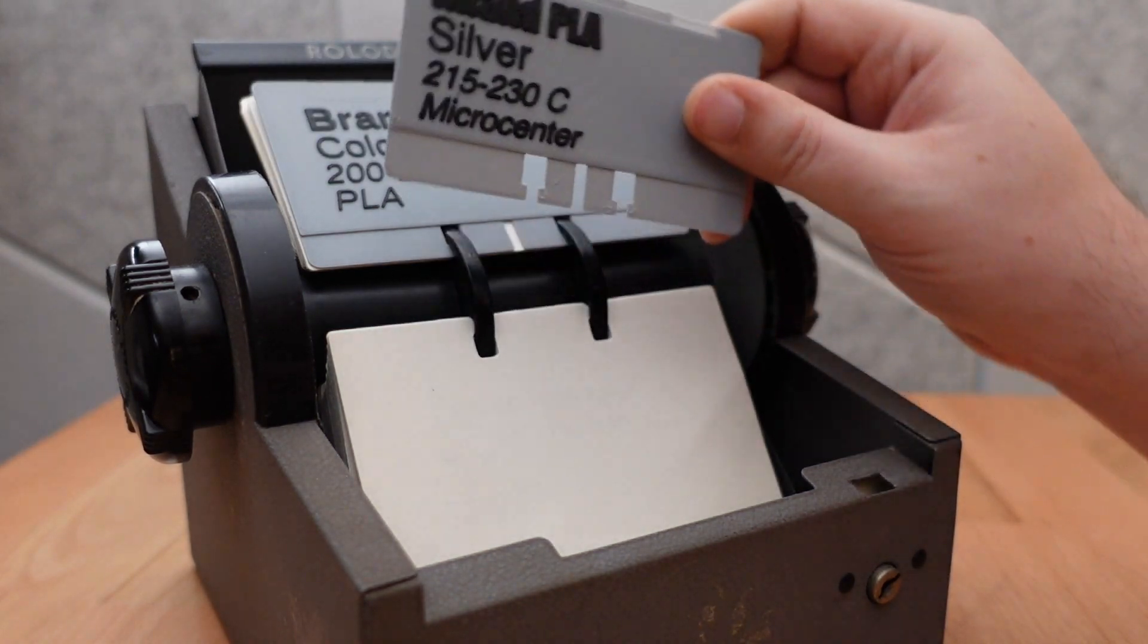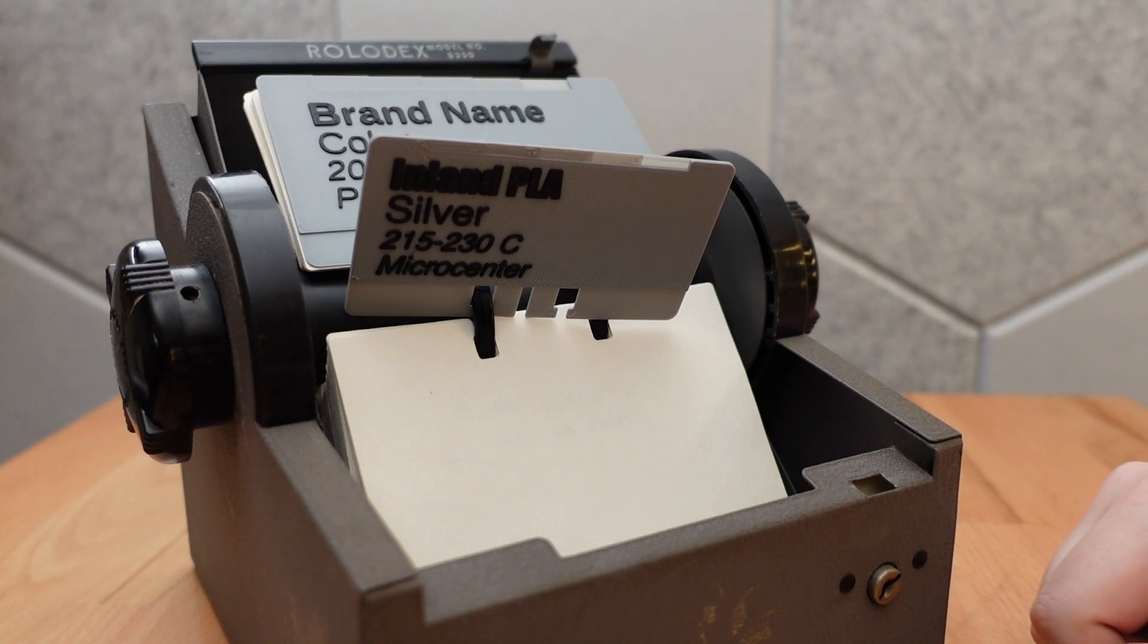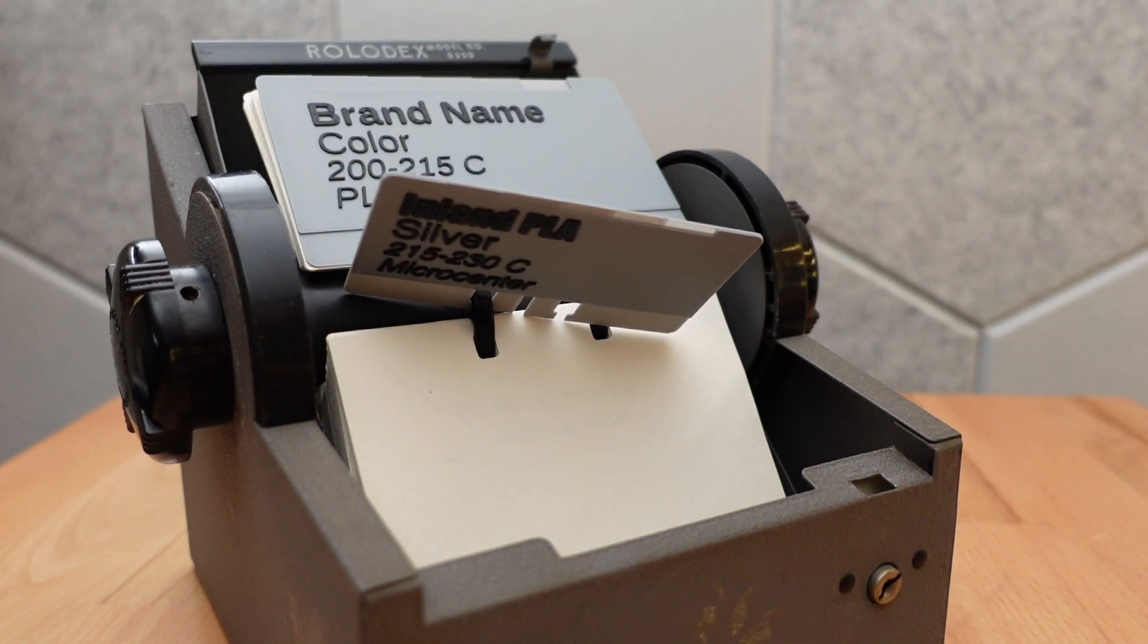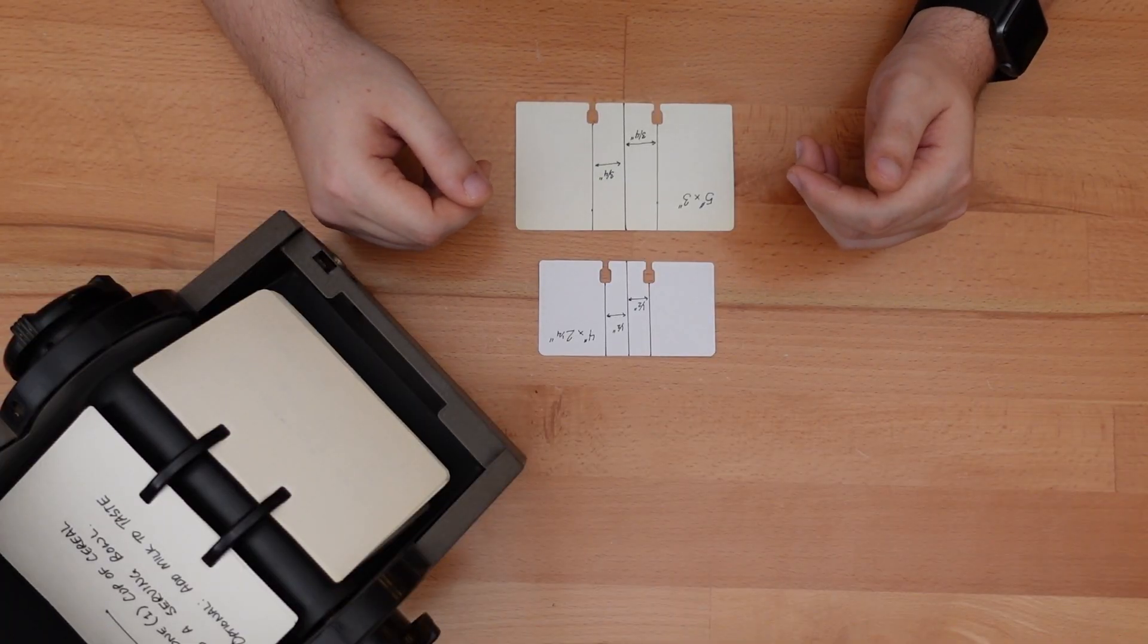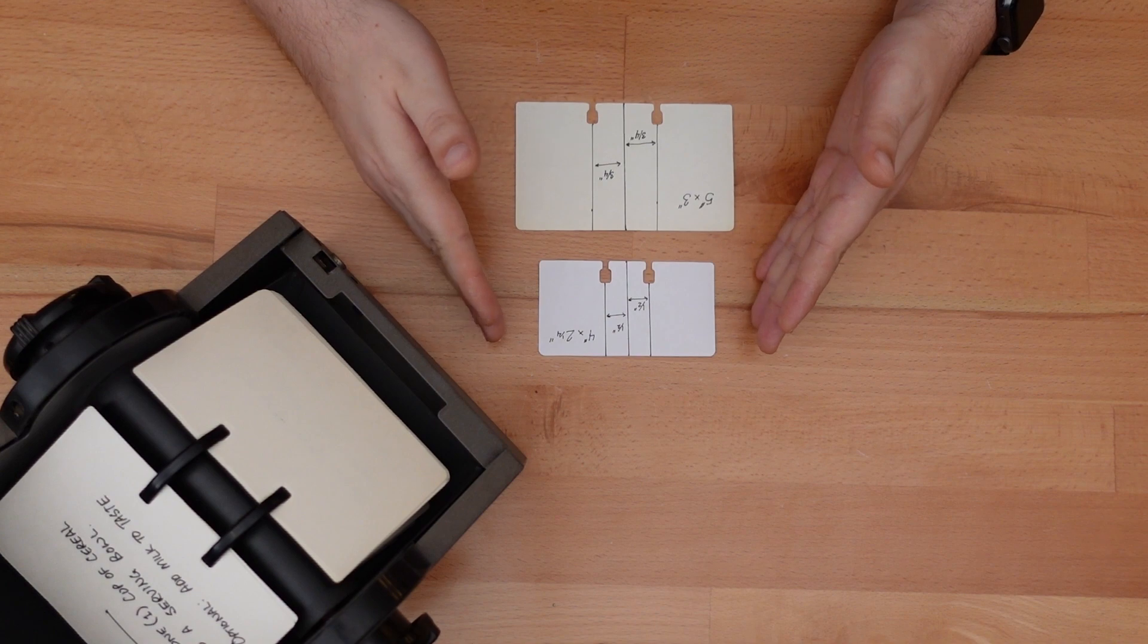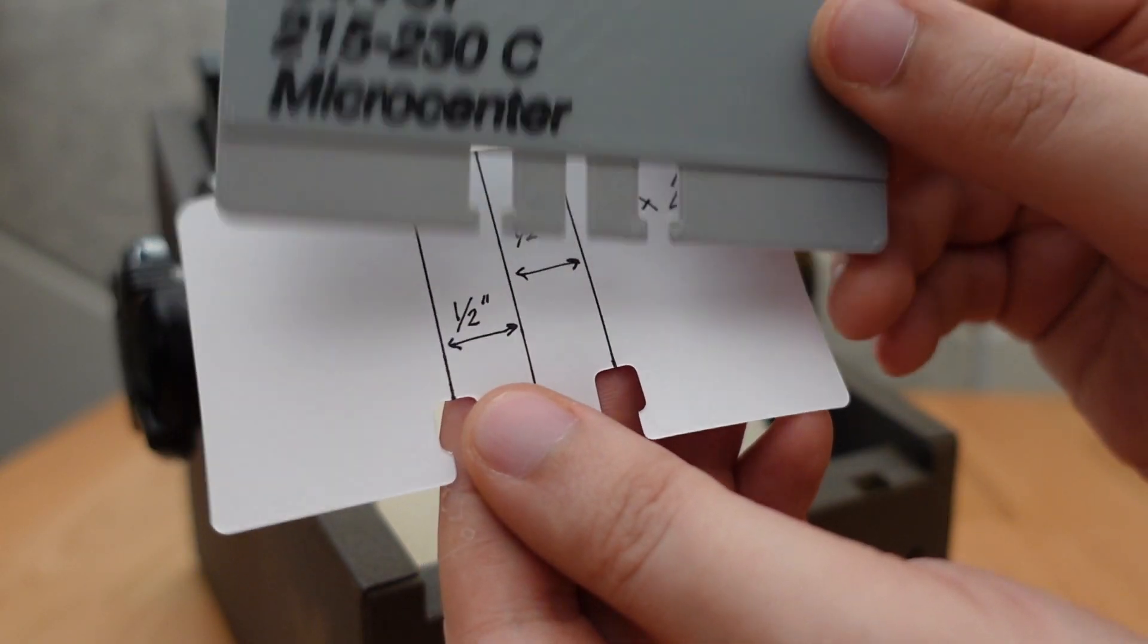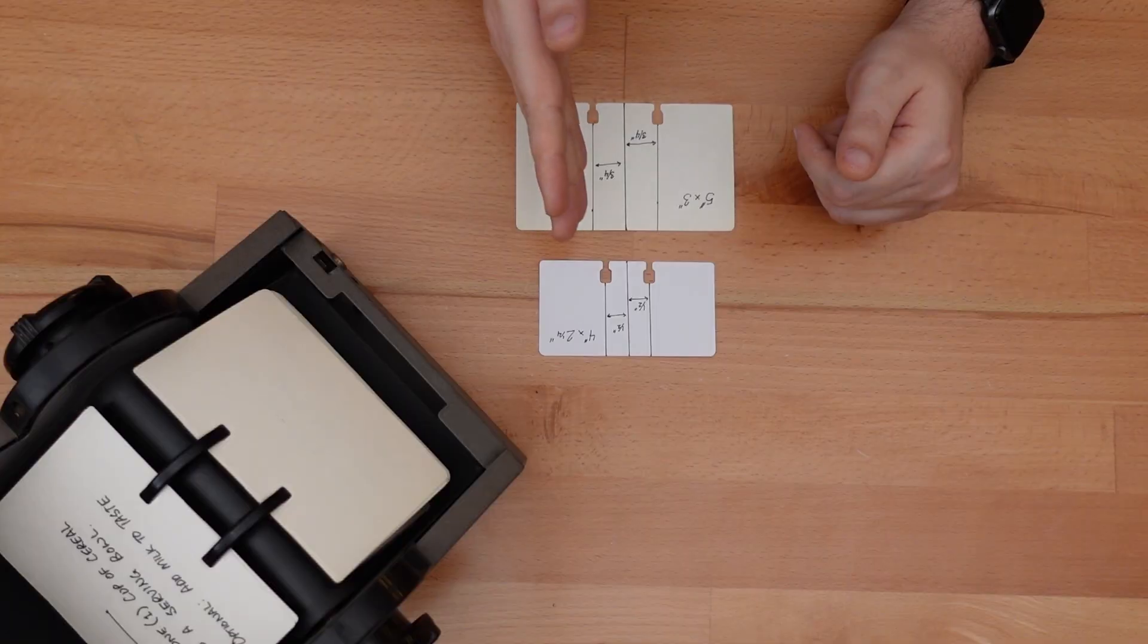Before I started this project, I thought all Rolodex cards were standardized. Sure, I knew the cards themselves could be different sizes, but I didn't realize that the track holes within the cards had different distances from the center. So for this design, you can set not only just the width and height of the card, you can also set the exact positioning of the Rolodex holes. I've defined the hole offset as the distance between the center of the card and the center of the hole.